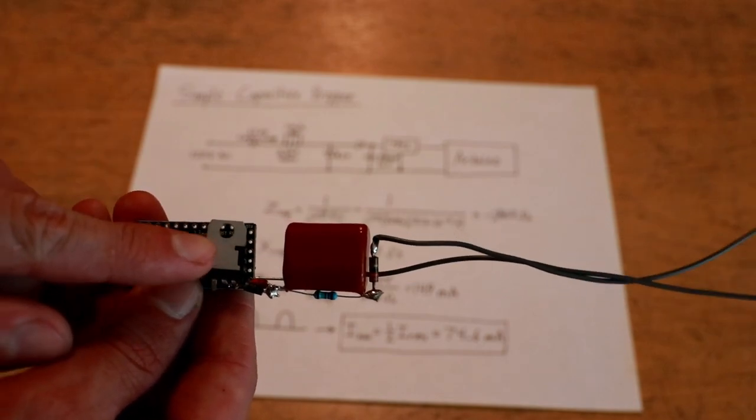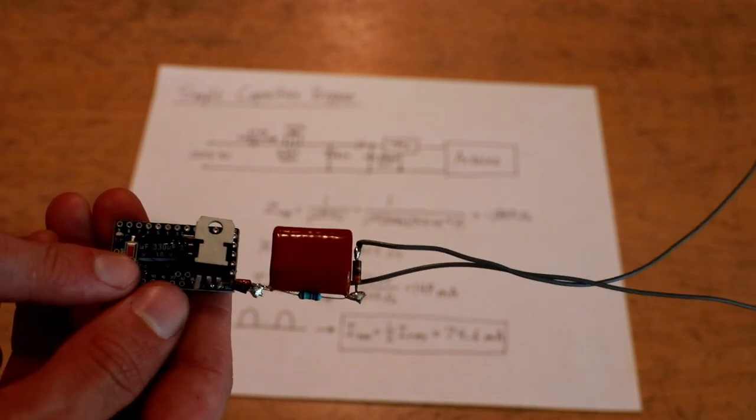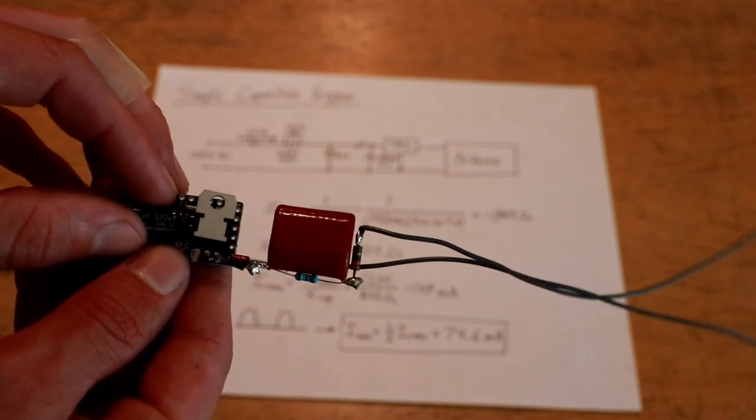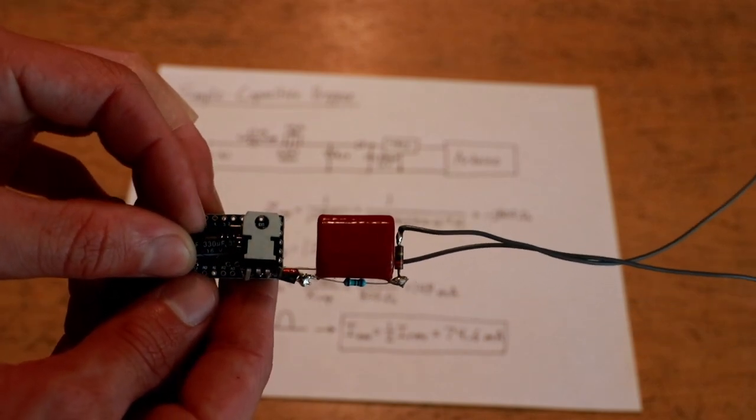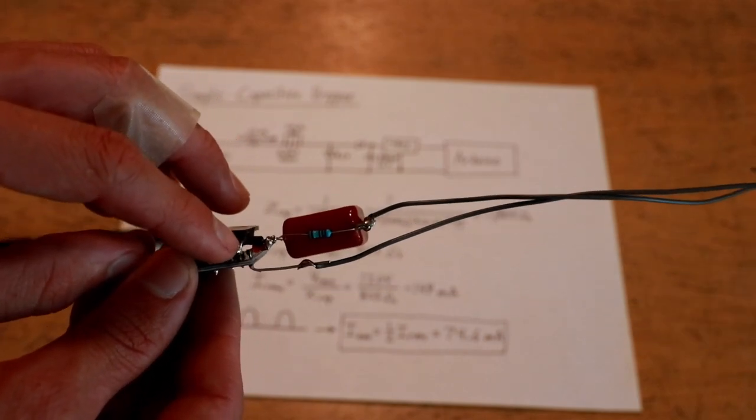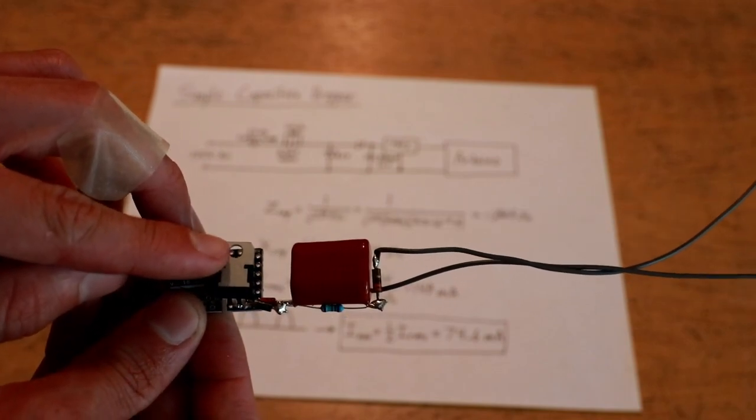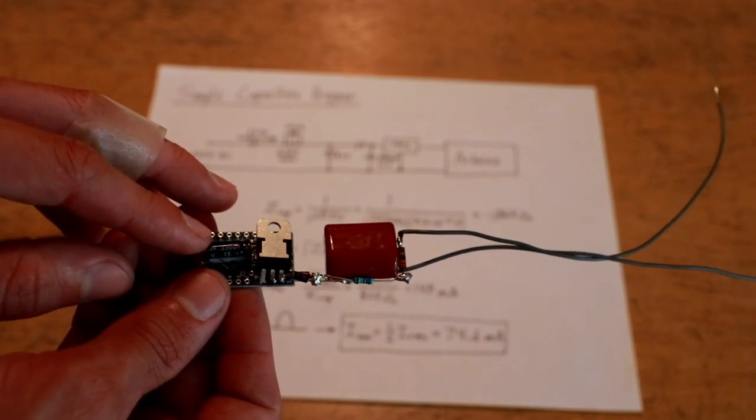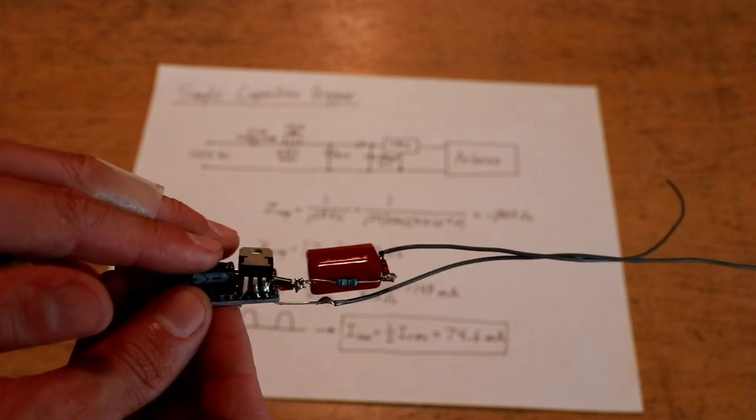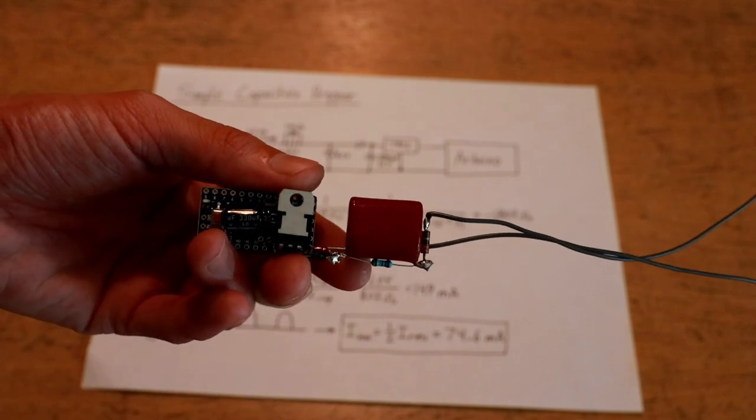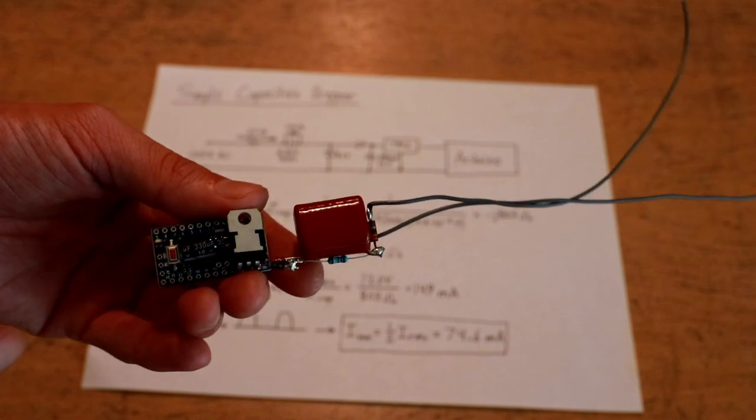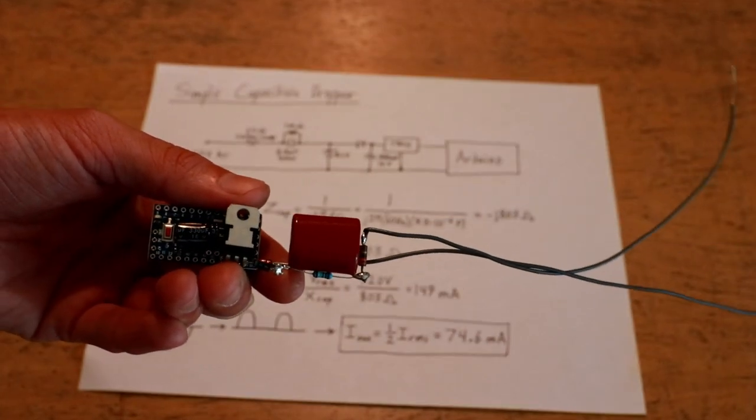I'm feeding that into a 5-volt linear regulator, which is then supplying my microcontroller. I additionally have put a 330 microfarad 16-volt capacitor across the zener diode to make sure the regulator always has a stable input voltage even though there may be some ripple from the rectified input. So this little power supply does actually work, and I can show you in a minute how it actually will power this Arduino directly from the mains.